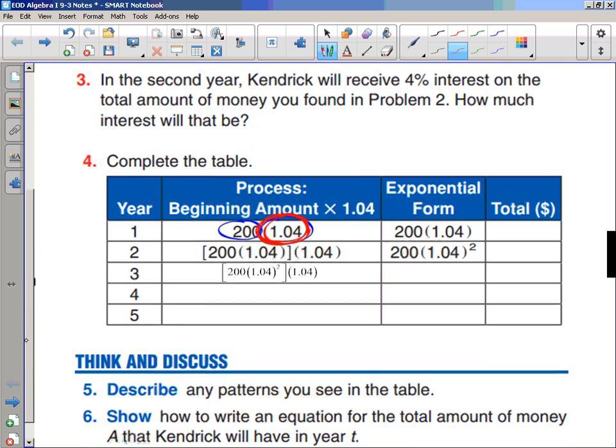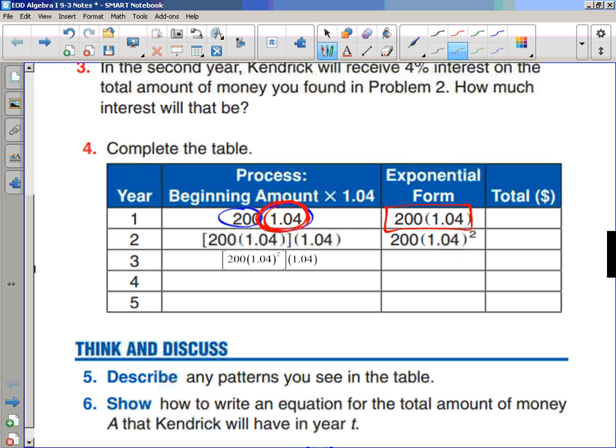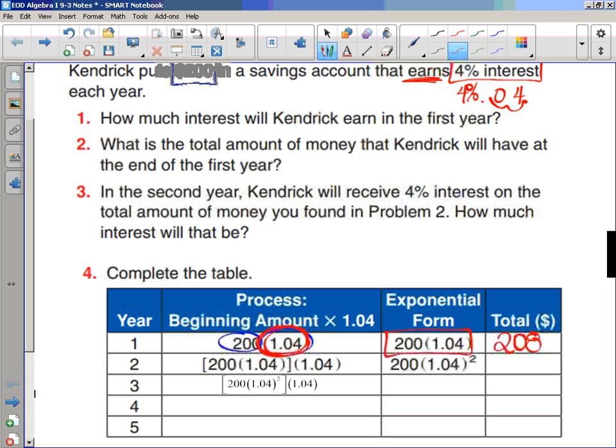So then, what we're going to do is we're going to put this in the calculator. So, if you guys don't have calculators with you, pause the video, find yourself a calculator, because we want to make sure and use that. So I'm going to put 200 times 1.04, and I get $208. That means how much interest will Kendrick earn in the first year? He started with 200, and at the end of the first year, he'll have $208 in the account. That means he earned $8 interest. That's how that works.